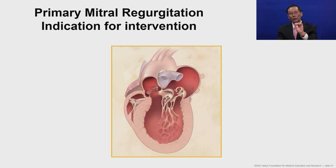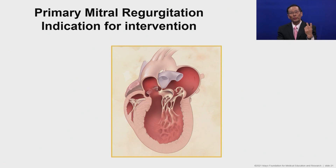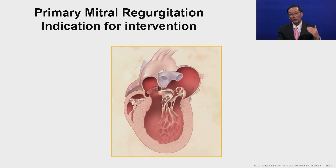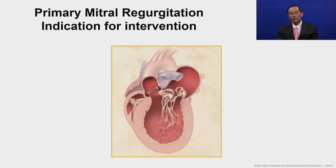For aortic stenosis, the approach has clearly changed. We still operate for symptoms and for ejection fraction less than 50%, but the threshold is progressively lower. In the low-risk patient, these additional parameters indicating insidious left ventricular interstitial fibrosis make it a very fruitful decision to operate earlier rather than later.